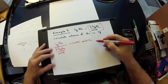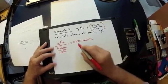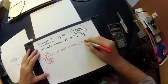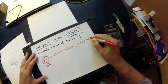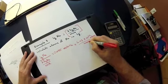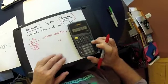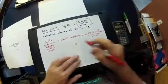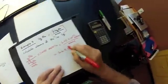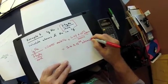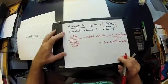We're halfway done — we want the total number of atoms in this 1-gram sample. We multiply 0.0435 moles by Avogadro's number — 6 times 10 to the 23rd atoms per mole — and we get 2.6 times 10 to the 22nd atoms of sodium. That's method number one.